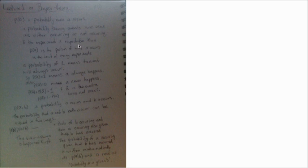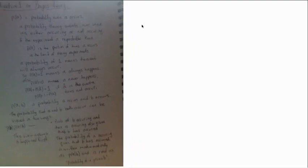If the experiment is repeatable, then probability of A is the proportion of times that A occurs if you do the experiment lots of times. And the probability of 1 means that the event always occurs. So if we write P(A) equals 1, that means A always.